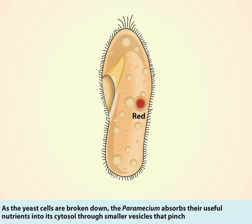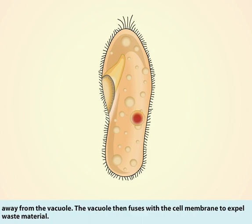As the yeast cells are broken down, the paramecium absorbs their useful nutrients into its cytosol through smaller vesicles that pinch away from the vacuole. The vacuole then fuses with the cell membrane to expel waste material.